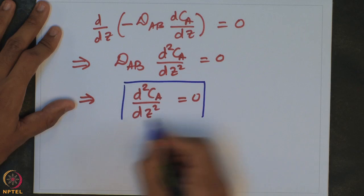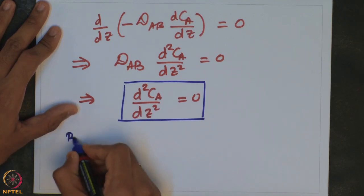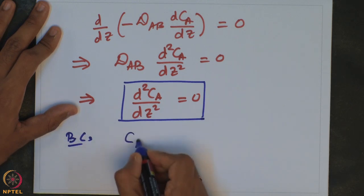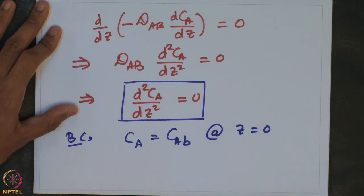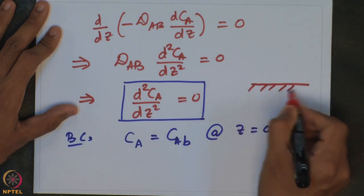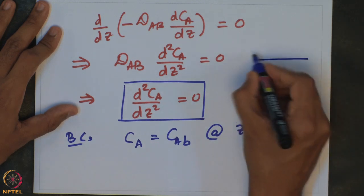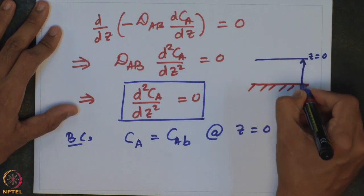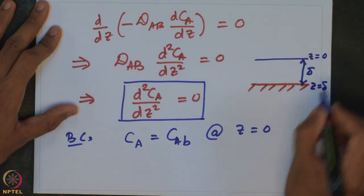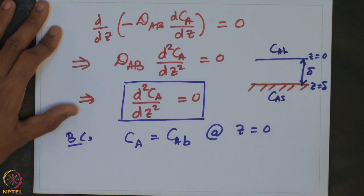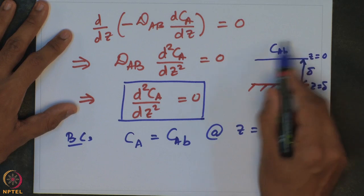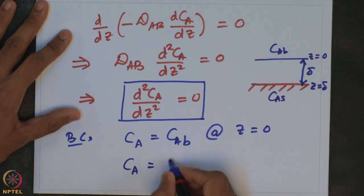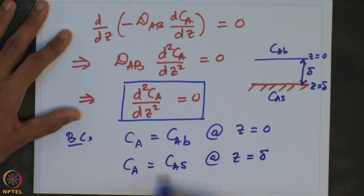The boundary conditions for this problem are: at z = 0, the concentration equals the bulk concentration — CA(0) = CAB; and at z = delta (the catalyst surface), the concentration equals the surface concentration — CA(δ) = CAs.